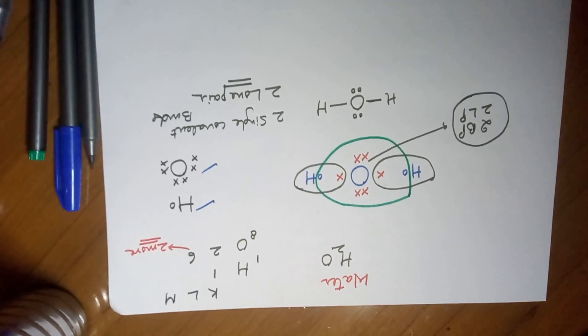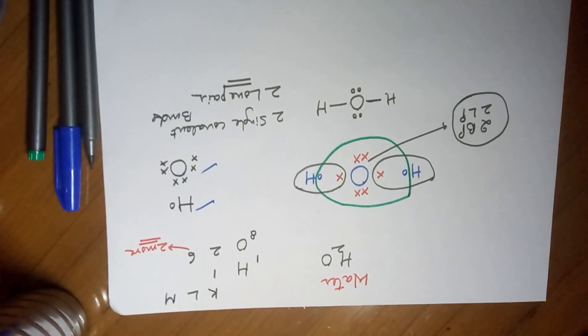With this we end the class on covalent bonding — we have done all the examples needed in Class 10. Rest of them you can try at your own level. Please share the video if you like it. Thanks, kids!